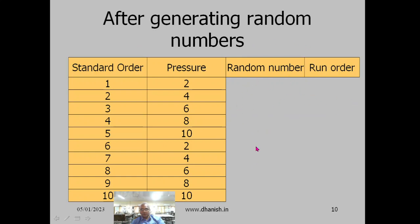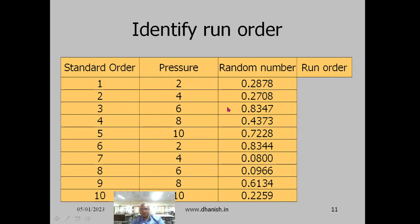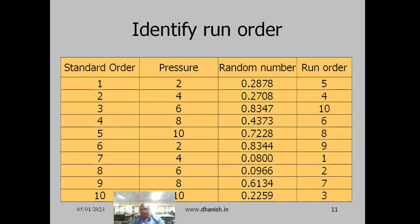After sorting, the run order is determined — the smallest random number gets run order 1, then 2, 3, and so on. The table giving the standard order, the independent variable values, and the run order is called the pre-experimental plan. In your rough record and fair record, there will always be two tables: one for the pre-experimental plan and another for the observation table.